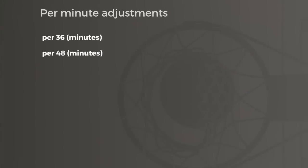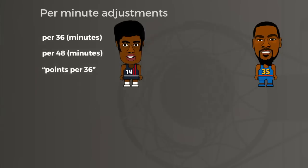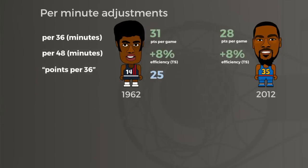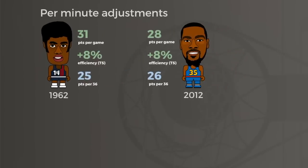Because of this, rates per minute became popular in the 2000s. This is a way to control for playing time to understand how frequently a player scored or rebounded or did anything per minute. Robertson scored 25 points per 36 minutes in 1962, and Durant 26 per 36. So when accounting for minutes played, Oscar's apparent scoring edge goes away.